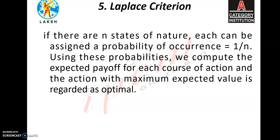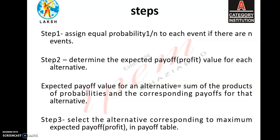In this criteria the stepwise procedure is as follows. Step number 1: assign equal probability 1 upon N to each event if there are N events. Step number 2: determine the expected payoff, i.e., the profit value for each alternative. The expected payoff value for an alternative is equal to the sum of the products of probabilities and the corresponding payoffs for that alternative. Step number 3: select the alternative corresponding to the maximum expected payoff in the payoff table.